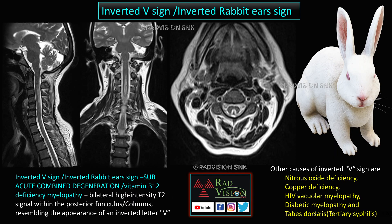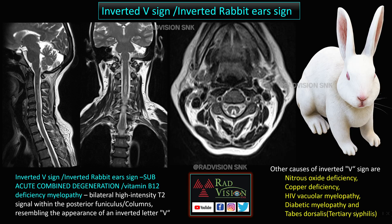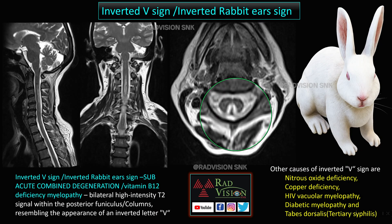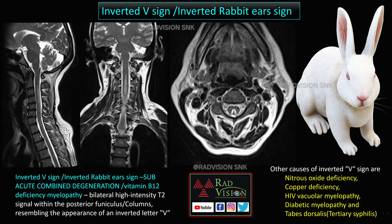Next case — guess the sign and diagnosis. Here you can see hyperintense signal in the spinal cord predominantly posteriorly. This is called the inverted V sign or inverted rabbit ear sign — bilateral hyperintense T2 weighted signal noted in the posterior funiculus. These are typically noted in the posterior funiculus or posterior columns, and the appearance resembles the inverted letter V.